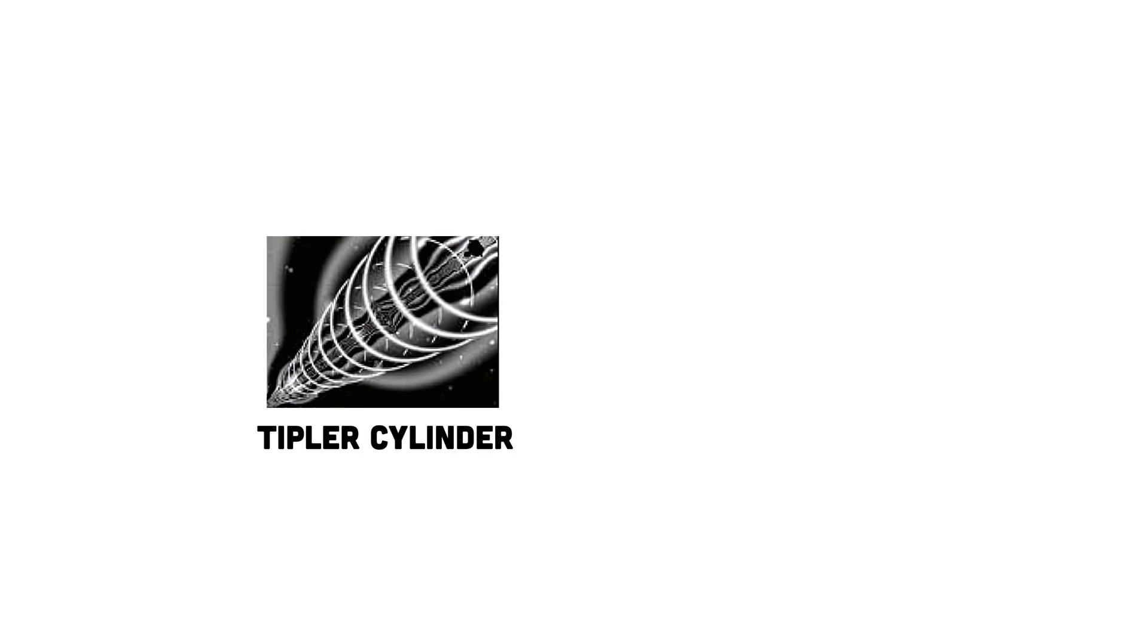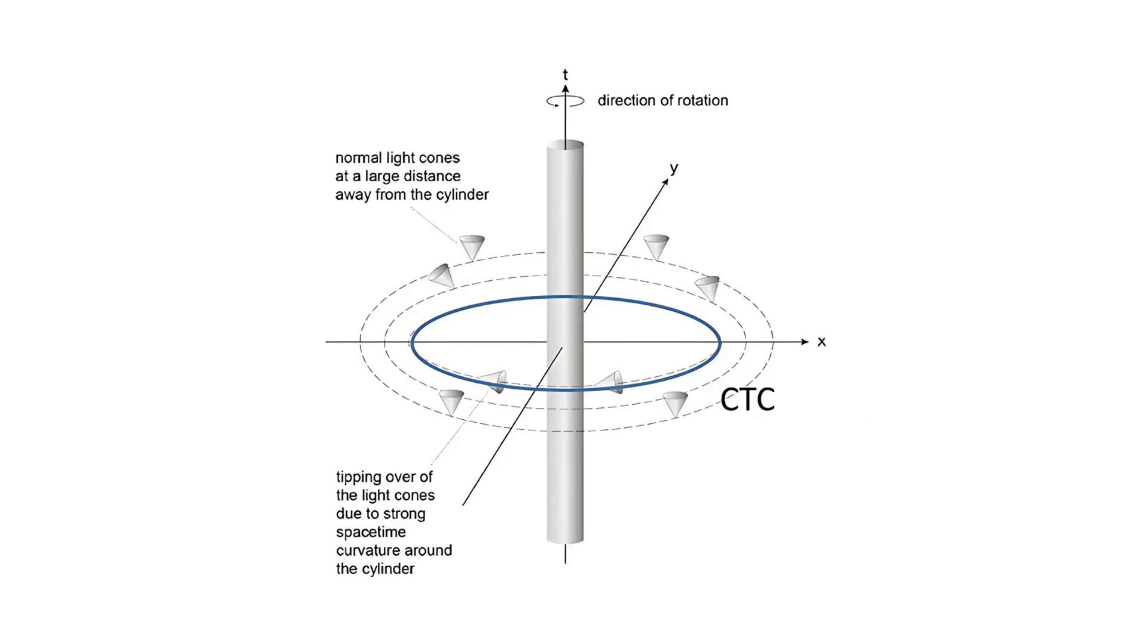Tipler Cylinder, also known as the Tipler Time Machine, this was proposed by physicist Frank Tipler back in 1974. Imagine an infinitely long cylinder with an incredibly high density, spinning incredibly fast. This rotation creates some seriously strange effects on spacetime around it. Here's how it might work for time travel. The rapid rotation of the Tipler Cylinder warps spacetime around it to an extreme degree. This warping could potentially create closed time-like curves, those loops in spacetime we talked about earlier that could allow an object to travel back to its own past.